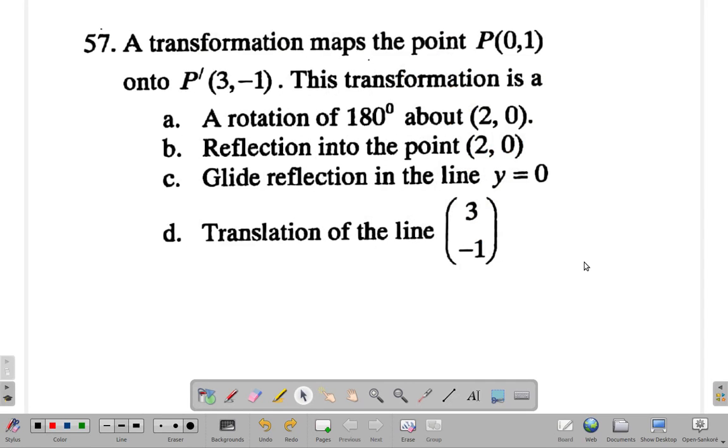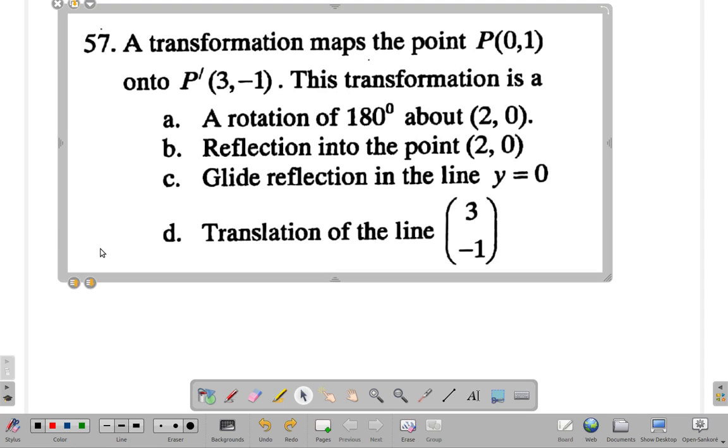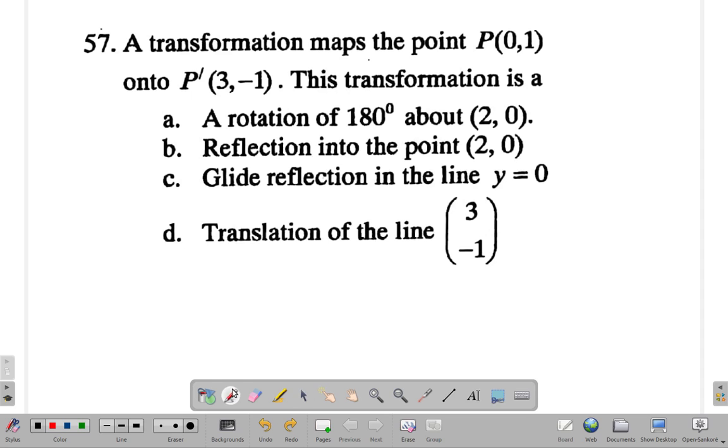Question 57: pause the video, answer it, and get back and see what you get. All right, so you've paused the video and answered it. What do you get? A transformation maps the point P(0,1) onto the point P'(3,-1). This transformation is... let's see.